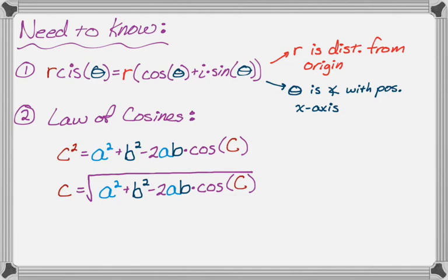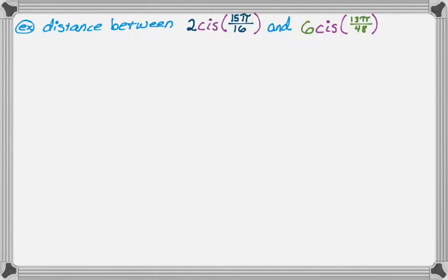So let's take a look at the problem that we're going to do. We want to find the distance between 2cis(15π/16) and 6cis(13π/48). So those are weird angles, but I chose them for a specific reason that you'll see as we do the problem.